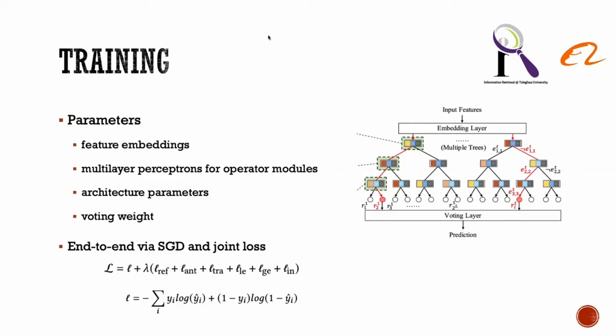Learnable parameters of an ENRL model include embeddings for all features, multilayer perceptions (MLP) for all operator modules, architecture parameters in each ECM, and voting weights for all rules in trees. All the parameters are jointly trained end-to-end. Lambda denotes the hyperparameter to control the strength of self-supervised loss.